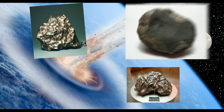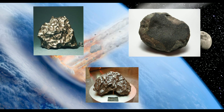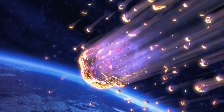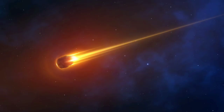A piece of rock or metal that has fallen to the Earth's surface from outer space is called a meteorite. Over 90% of meteorites are rock, while the remainder consist wholly or partly of iron and nickel. An estimated 25 million meteoroids, micrometeoroids, and other space debris enter Earth's atmosphere each day, resulting in an estimated 15,000 tons of material entering the atmosphere each year.